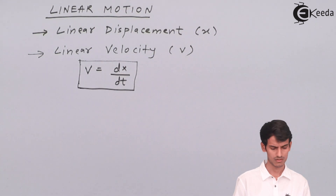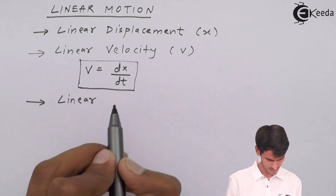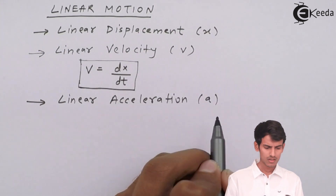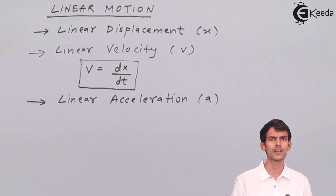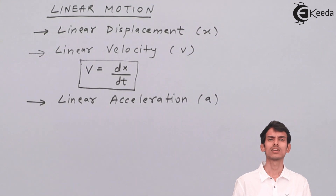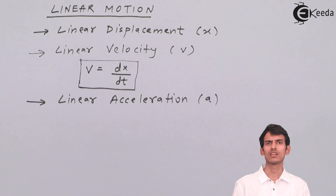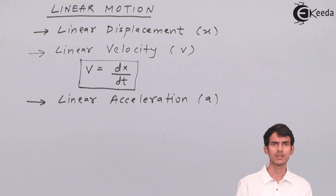The third term involved is linear acceleration, which is denoted by the alphabet a. The relation between velocity and acceleration is a = dv/dt. Acceleration is nothing but the rate of change of velocity, so we write a as dv/dt in terms of derivatives.